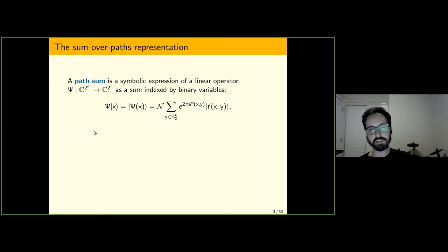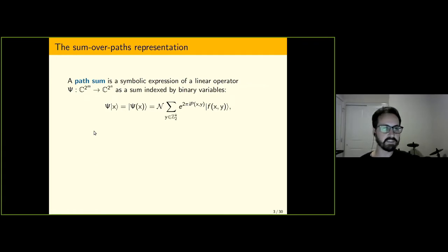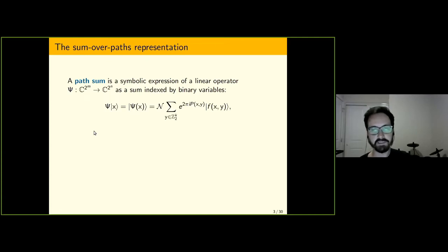So we took the viewpoint, instead of trying to extract from ZX or ZH diagrams, we were looking at the problem of extracting from a different but somewhat related representation of quantum computations called the sum over paths, to see if that would maybe lead to some easier methods of extracting circuits. Unlike the ZX calculus, I need to explain a little bit about the sum over paths representation because many of you probably wouldn't have seen this before.